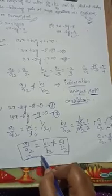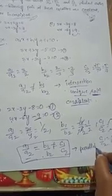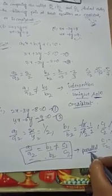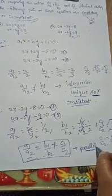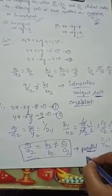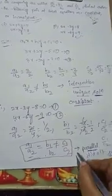We know the relation: A1 by A2 equal to B1 by B2, not equal to C1 by C2. In this case, these two lines are parallel lines. Parallel lines never intersect, so we couldn't get the solution — we cannot identify a solution. Therefore, these two equations are inconsistent.